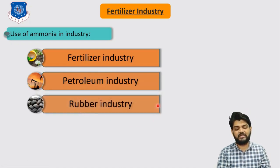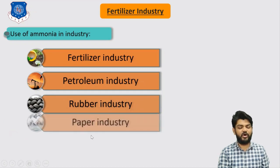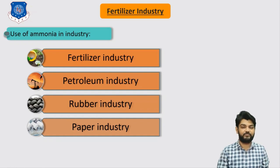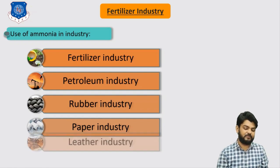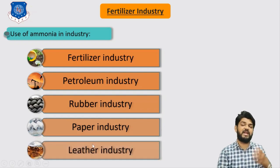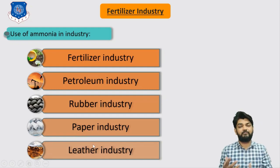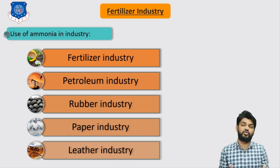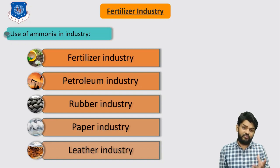Ammonia is also used in the petroleum industry for refrigeration and other purposes, in rubber industries, in paper and pulp industries, and in the leather and fabric industries. Ammonia is a very versatile product used in many industries, but the majority is consumed by the fertilizer industry.